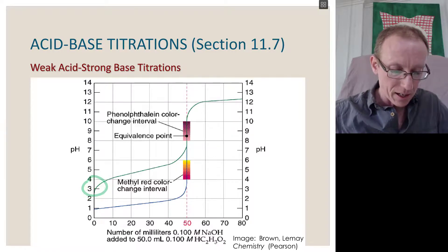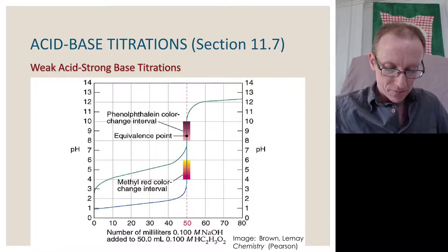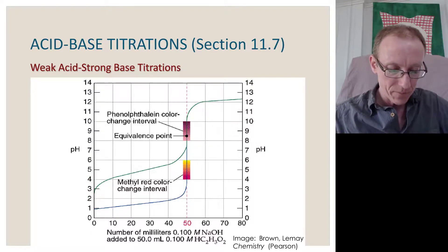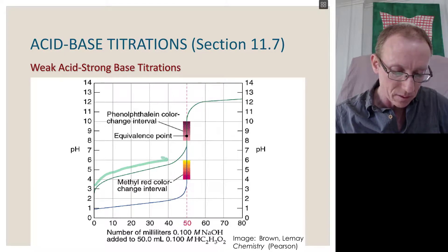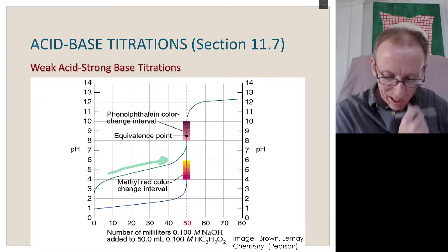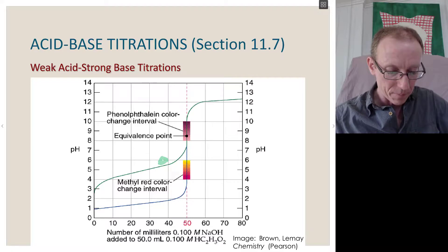Starting off with a pH of around 2.5 or so, we add in sodium hydroxide and the pH doesn't change a whole lot. It goes through this part of the equation here, where we're going up through 3, 4, 5, 6, until we get to the equivalence point.